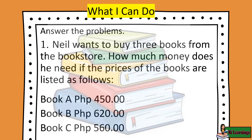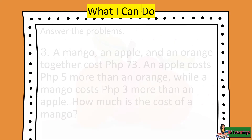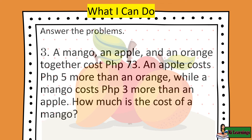Answer the following problems. 1. Neil wants to buy 3 books: Book A costs 450 pesos, Book B costs 620 pesos, Book C costs 560 pesos. How much money does he need? 2. During a garage sale, Maylene bought T-shirts for 70 pesos, Jeans for 150 pesos, and Shoes for 200 pesos. How much did it cost her to buy all 3 items? 3. A mango, an apple, and an orange together cost 73 pesos. An apple costs 5 pesos more than an orange, while a mango costs 3 pesos more than an apple. How much is the cost of a mango?